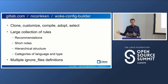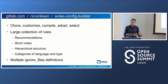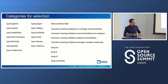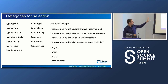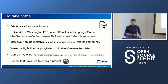The woke config builder is a repository you can take and make your own. It's a hierarchical structure of rules composed and rendered out to a single woke configuration file. You can make modifications, add things, render out and publish it somewhere, then directly import that public URL into woke for usage. It also has ignore file definitions to avoid false positives from dependency names. You can see categories referencing the Inclusive Naming Initiative and various types of non-inclusive words.